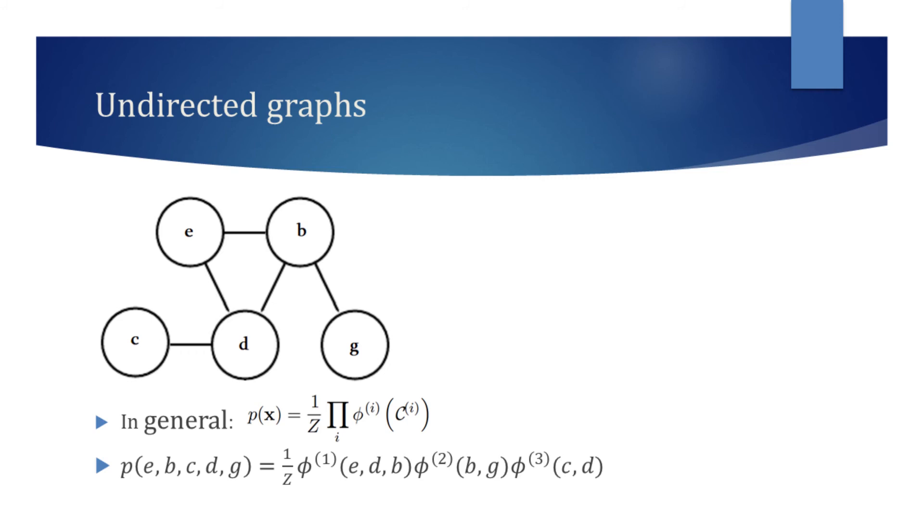You can now see an undirected model over the same random variables as before. A set of nodes that are all connected to each other form a clique. According to the general formula, we simply have to write the product of the functions of cliques and divide them by the normalizing constant z.